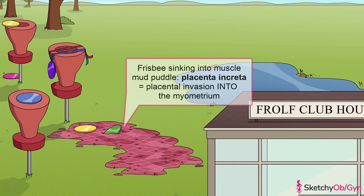Placenta increta is when those chorionic villi penetrate into the myometrium, which means it's even more stuck to the uterus than in accreta. We just can't catch a break — throw a par 3 our way!